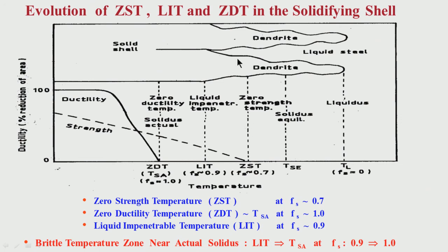At the zero strength temperature, 70 percent solid is present and 30 percent is liquid — the strand is starting to develop strength. This dotted line shows the strength has started developing. Above this temperature, when the solid fraction is less than 0.7, there is no strength in the strand at all. The strand is developing strength at solid fraction 0.7 and then it is increasing as we come down in temperature.